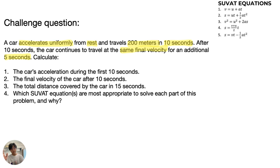In the next five seconds, the car continues to travel at the same final velocity. What does the same final velocity mean? It basically means that there is no acceleration, and u equals v. Time is five seconds, and displacement is not given.